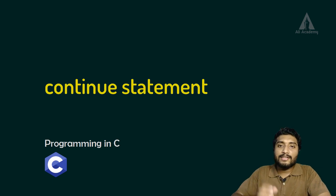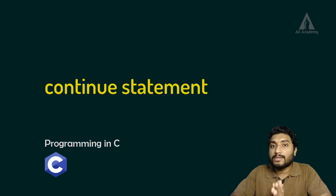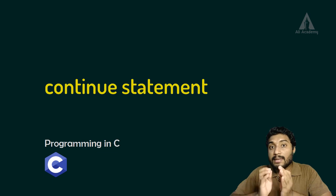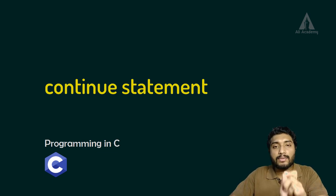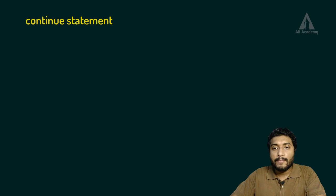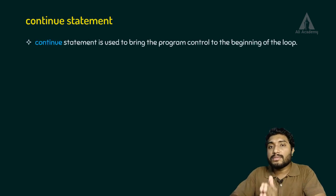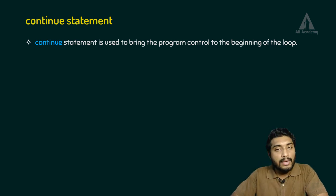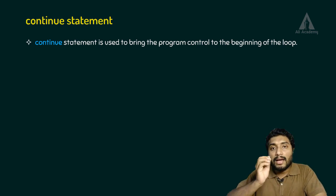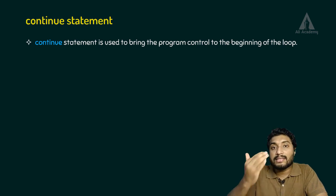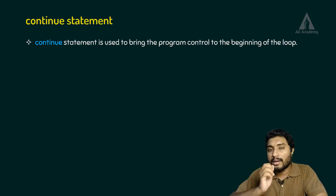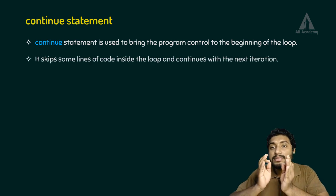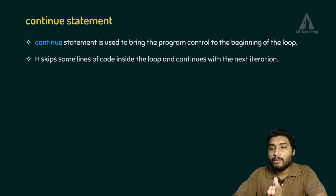In this lecture, we are going to discuss the continue statement in C programming. The continue statement is used to bring the program control to the beginning of a loop. It is used to skip some lines of code inside the loop and continue with the next iteration.